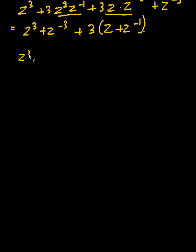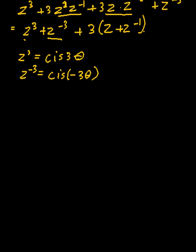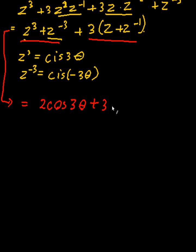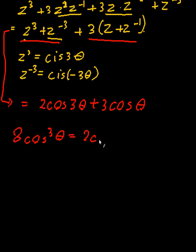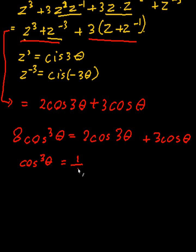Now, z³ equals cis 3θ, and z⁻³ equals cis(−3θ), so z³ plus z⁻³ equals 2cos 3θ. And z plus z⁻¹ equals 2cos θ, so 3(z + z⁻¹) equals 6cos θ. Therefore 8cos³θ equals 2cos 3θ plus 6cos θ. Dividing by 8 gives cos³θ equals ¼cos 3θ plus ¾cos θ.